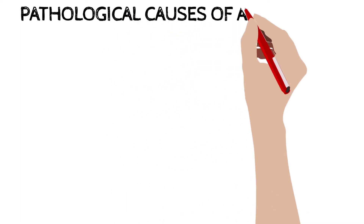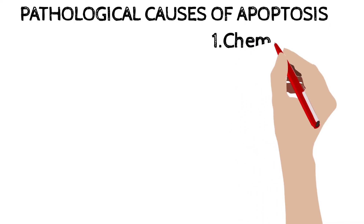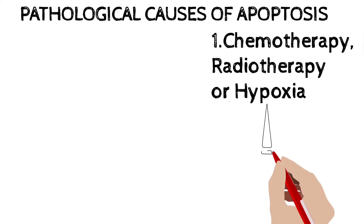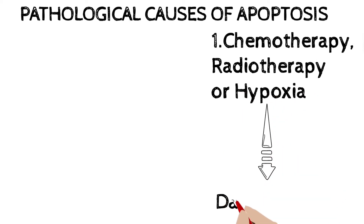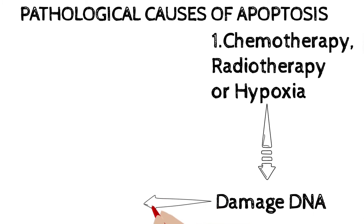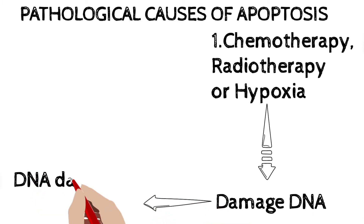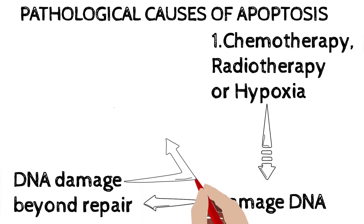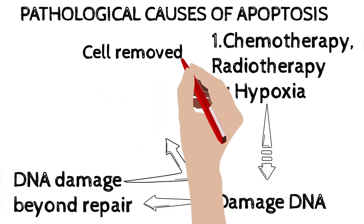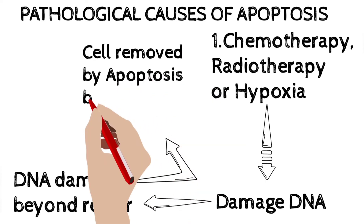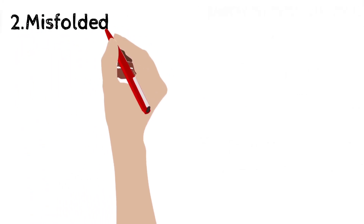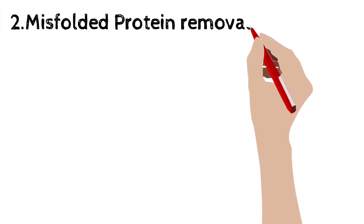Now the pathological causes of apoptosis: the first example is chemotherapy, radiotherapy, or hypoxia-induced cell damage. Because of these three principal causes, you can have damage to the DNA. Sometimes such injury is so severe that the DNA damage cannot be repaired by the p53 gene. If it cannot be repaired, there will be cell removal through apoptosis — p53 will get activated and trigger the cell to undergo apoptosis.